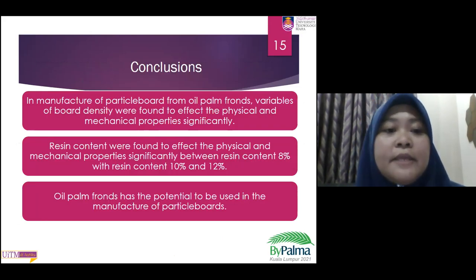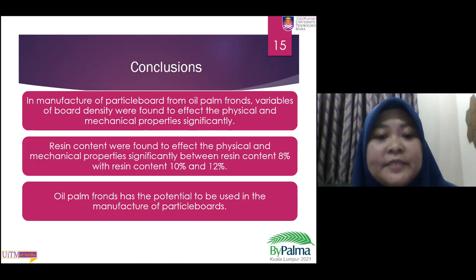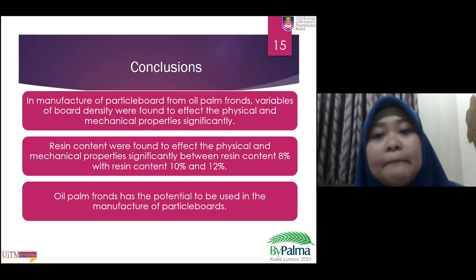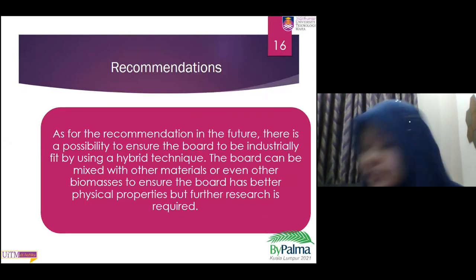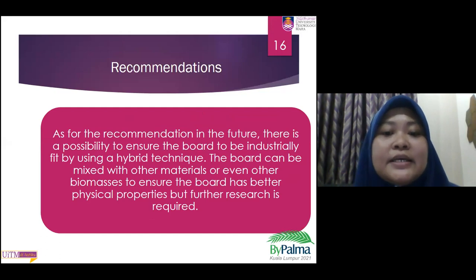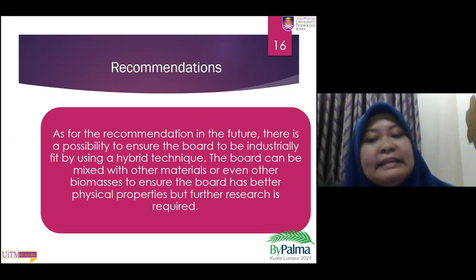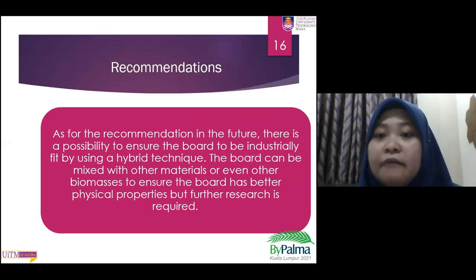In conclusion, in the manufacture of a particle board from oil palm frond, variables of board density were found to significantly affect the physical and mechanical properties. Resin content was found to significantly affect the physical and mechanical properties, particularly between resin content of 8% versus 10% and 12%. The oil palm frond has the potential to be used in the manufacture of particle board. As for the recommendation, there is a possibility to make the board industrially viable by using a hybrid technique — mixing with other materials or biomaterials to ensure better physical properties — but this needs further research.